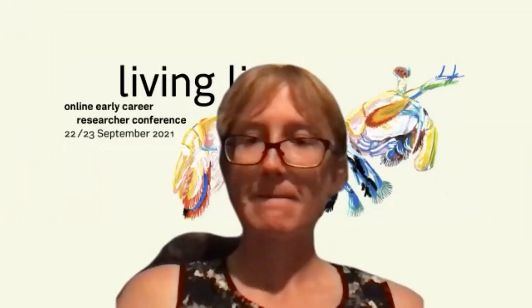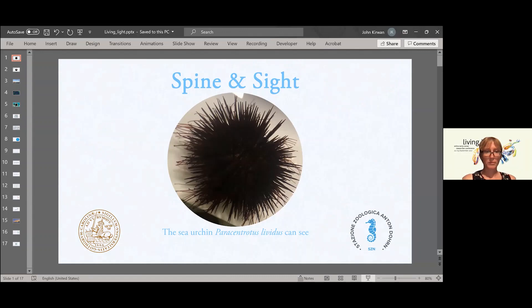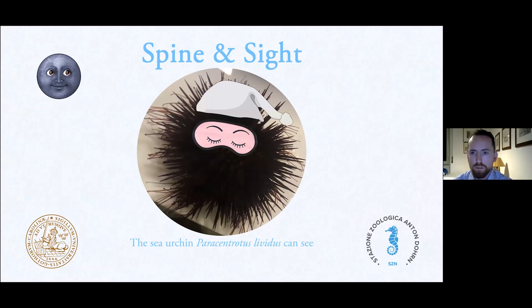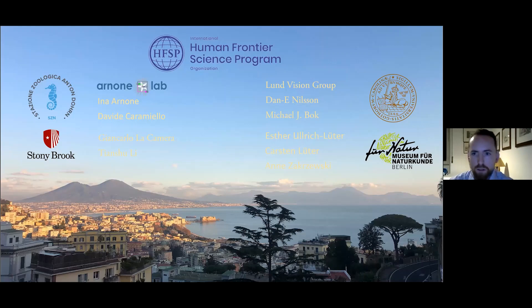Next speaker is Anurud Chakravorty. My name is John Kierman. I'm a postdoc at Stazione Zoologica Anton Dohrn in Naples, Italy, where I'm working on understanding vision in an echinoderm — the sea urchin. The title of my talk is 'Spine and Sight: The sea urchin Paracentrotus lividus can see.' Thank you all for coming, including those here very late at night or very early in the morning. Thanks to everybody involved in this Human Frontier Science Program project and to our collaborators in Naples, Lund Sweden, Germany, and Stony Brook New York.